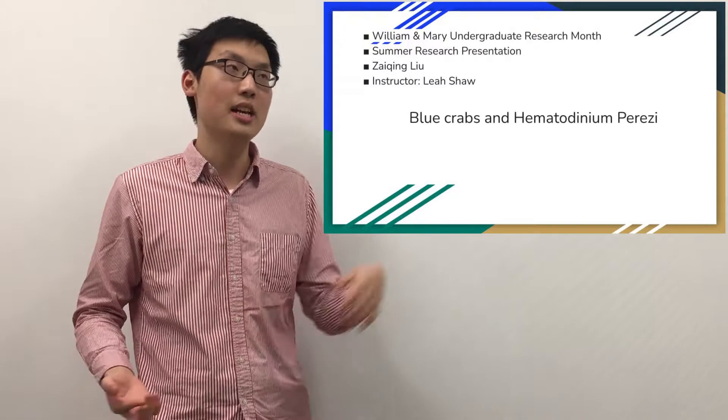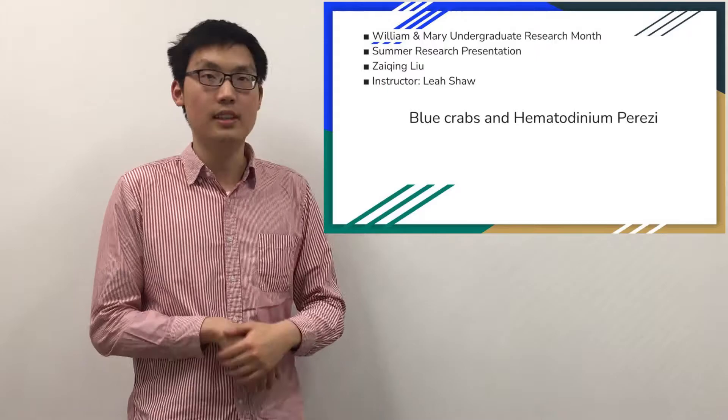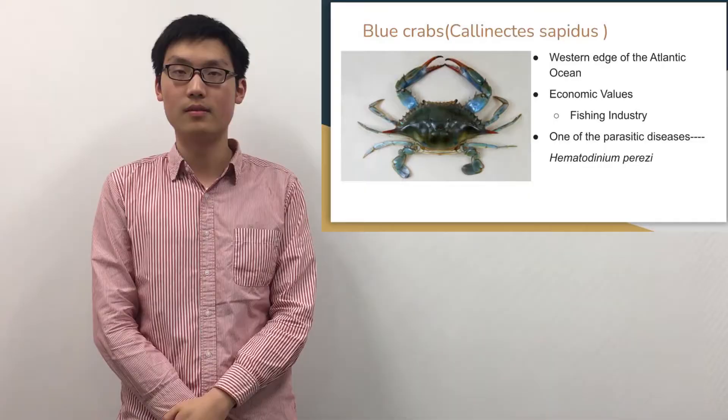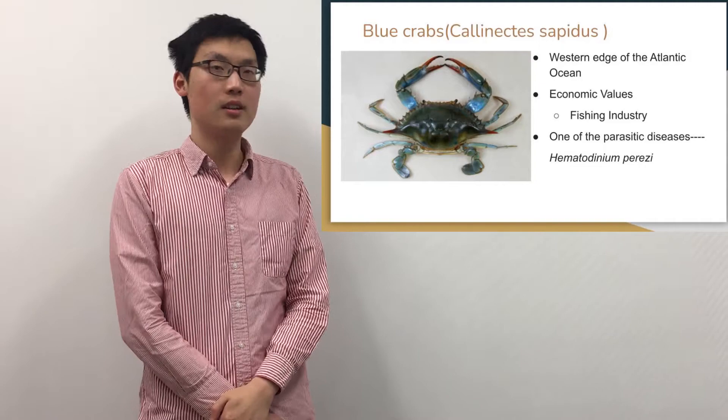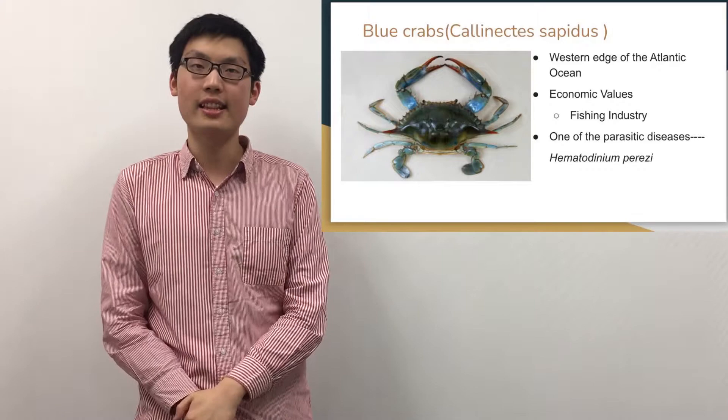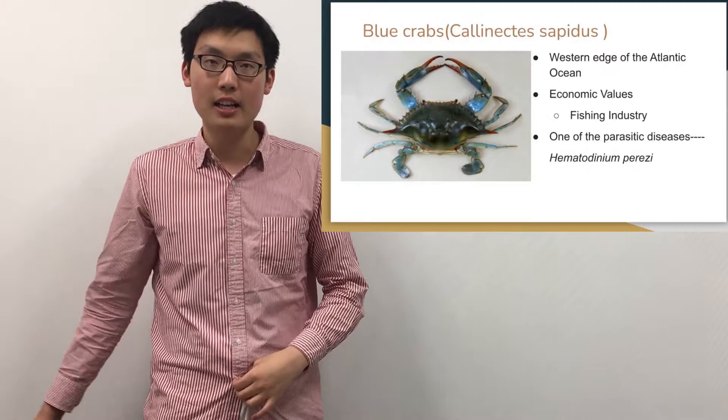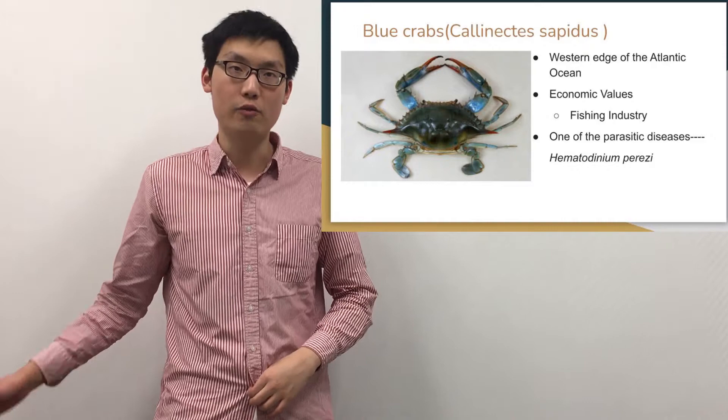So what is a blue crab? Blue crab is a type of crab that lives along the western edge of the Atlantic Ocean and the Gulf of Mexico. Chesapeake Bay is also one of their main habitats, and it's next to our school — that is the place where most of our data come from.